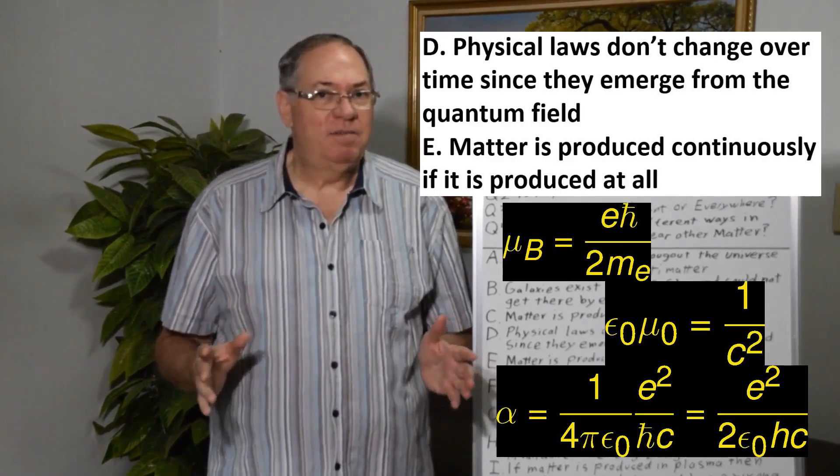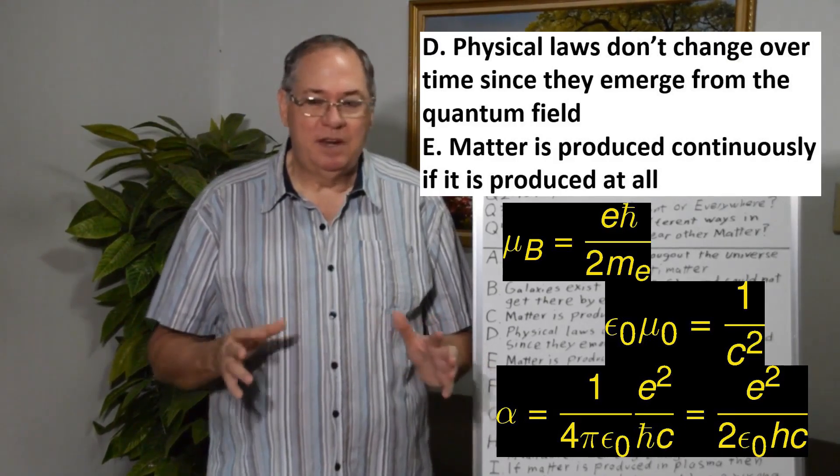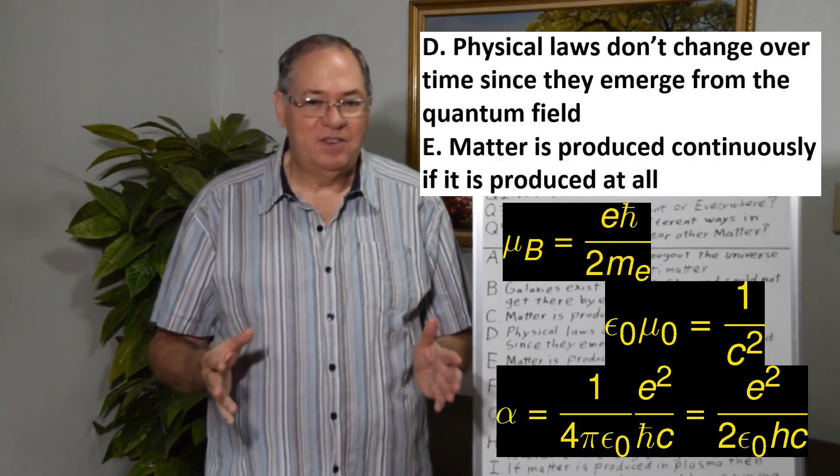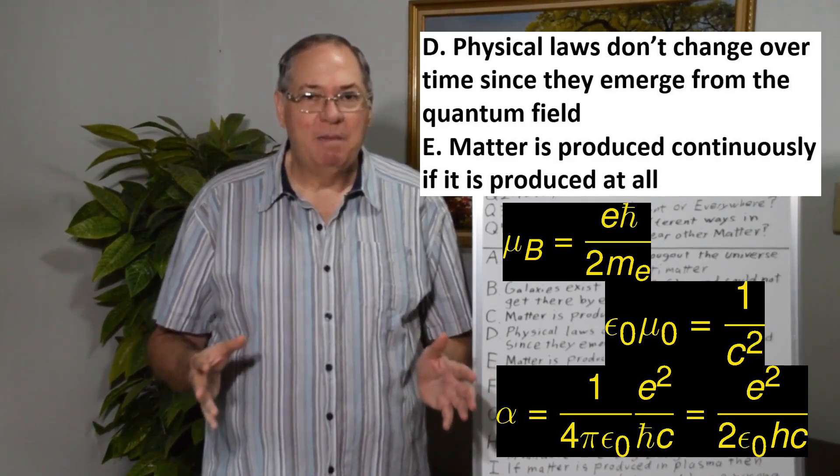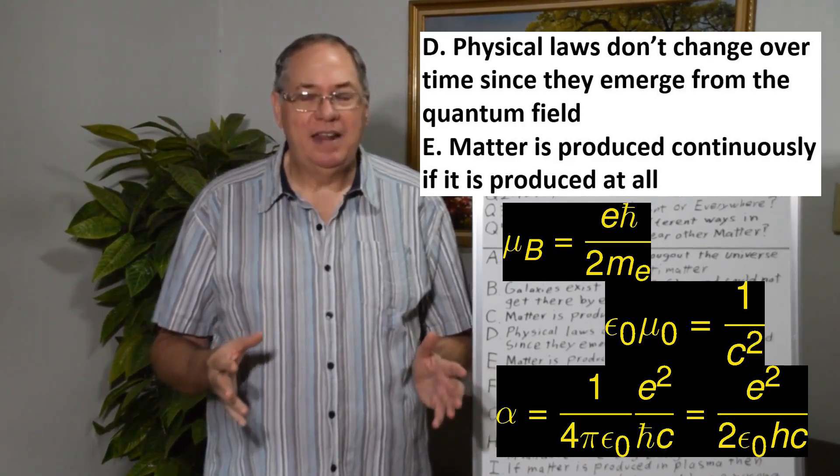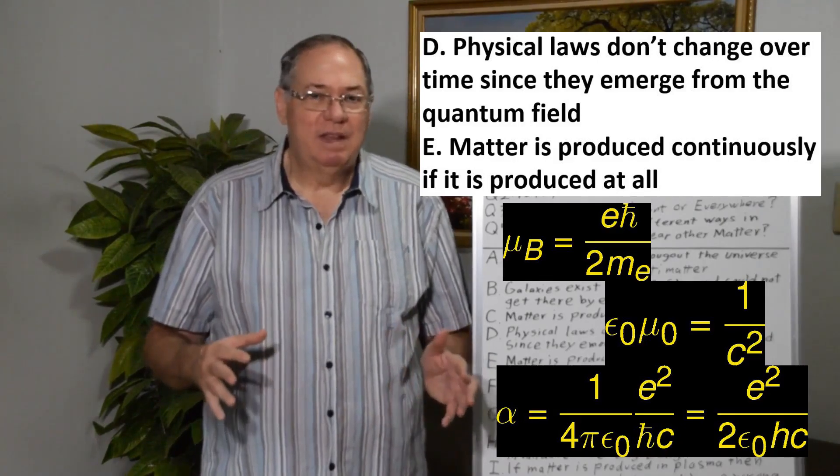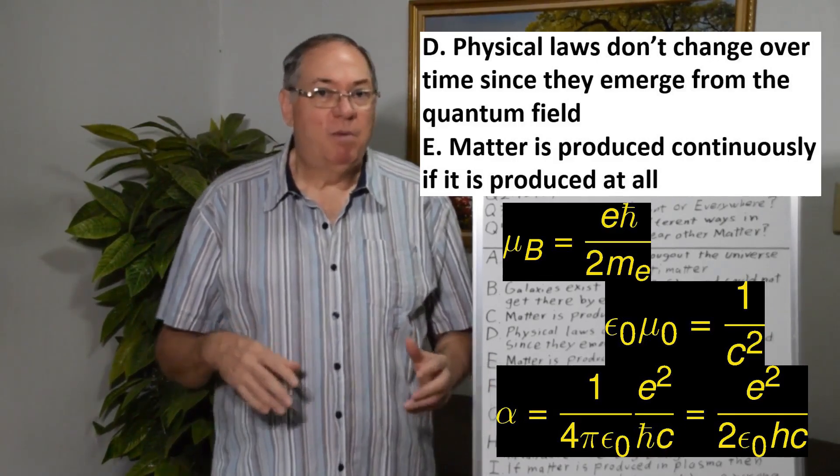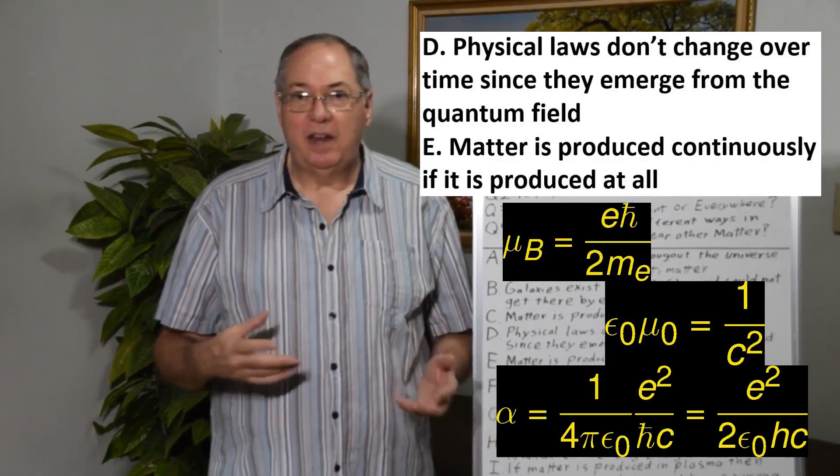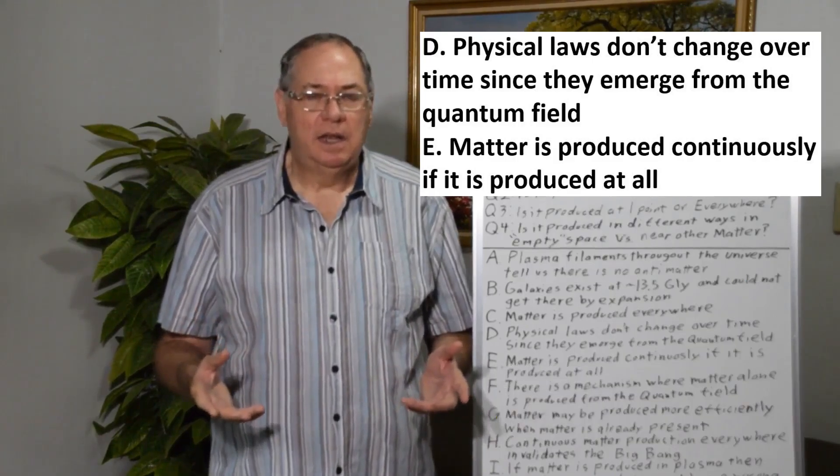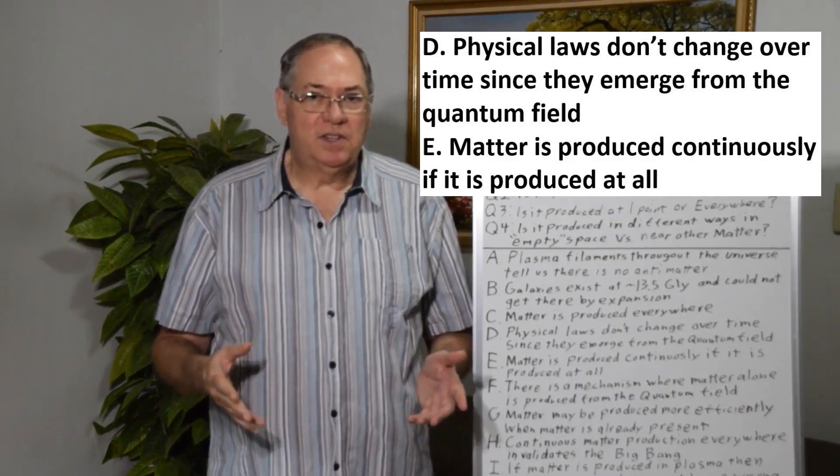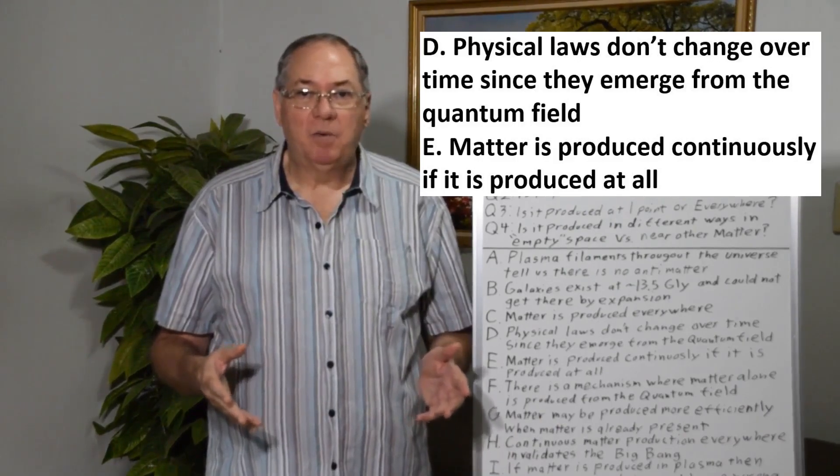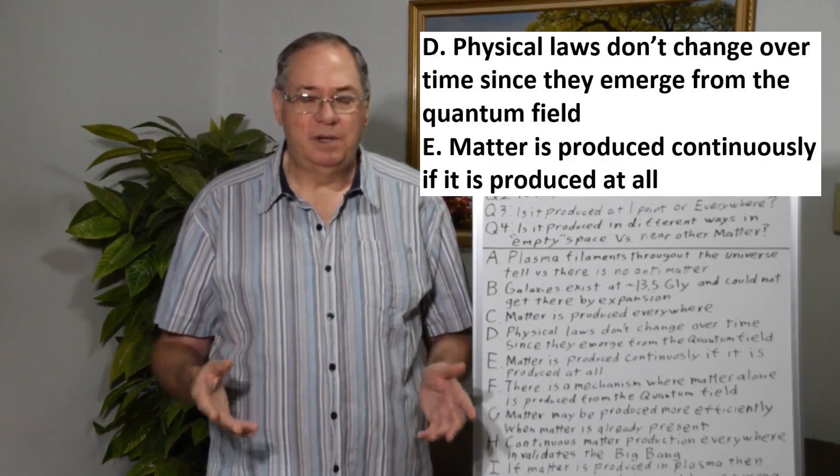But that's about all the flexibility you have. Because of the interrelationships, you can't arbitrarily make major changes to any of the constants and still have our physics work. You break it if you make a major change to any one major constant. So assuming the laws of physics are the same, that means matter was continuously produced.